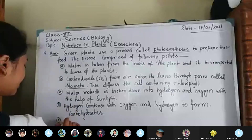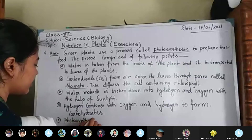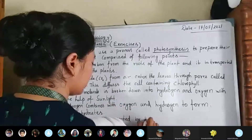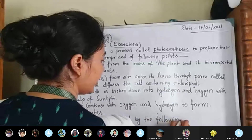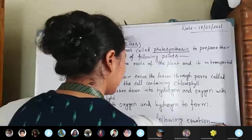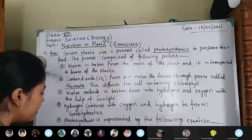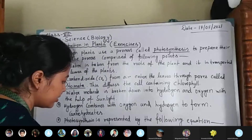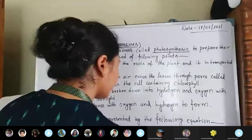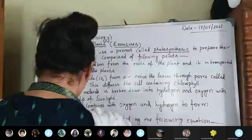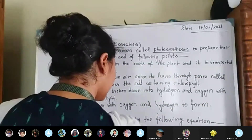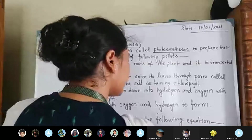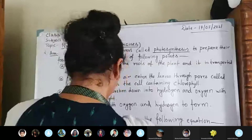Photosynthesis is represented by the following equation, which I have already mentioned during your class: carbon dioxide plus water, in the presence of sunlight and chlorophyll, will form carbohydrate and oxygen.